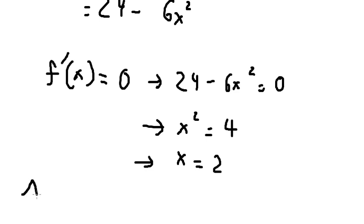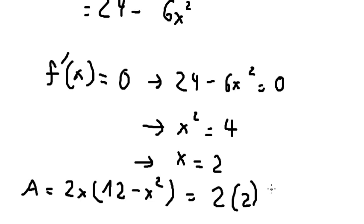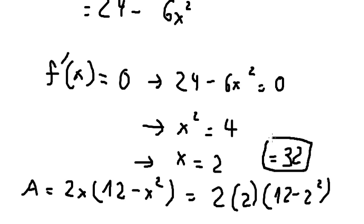So A = 2x(12 - x²). I will put 2 in here, so A = 2(2)(12 - 4) = 4(8) = 32. And that is the final answer.